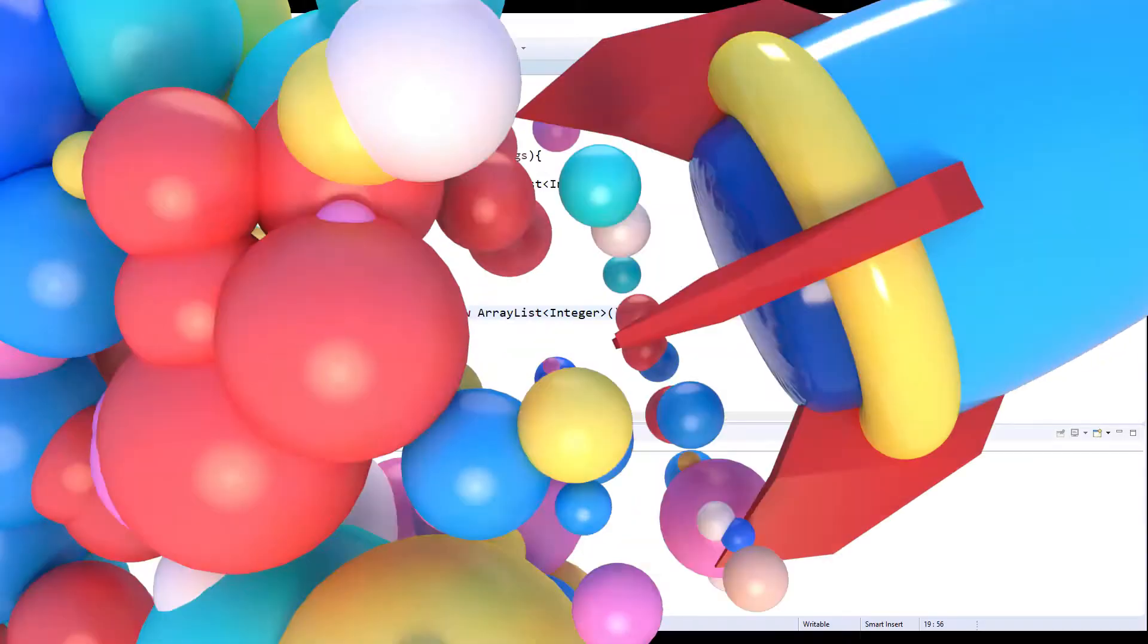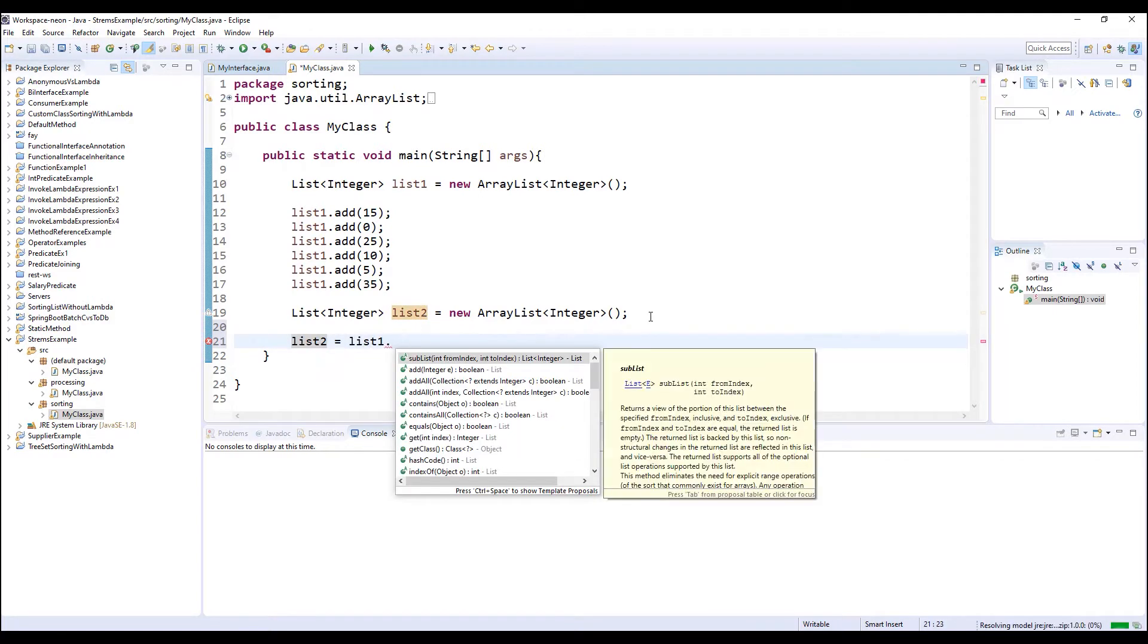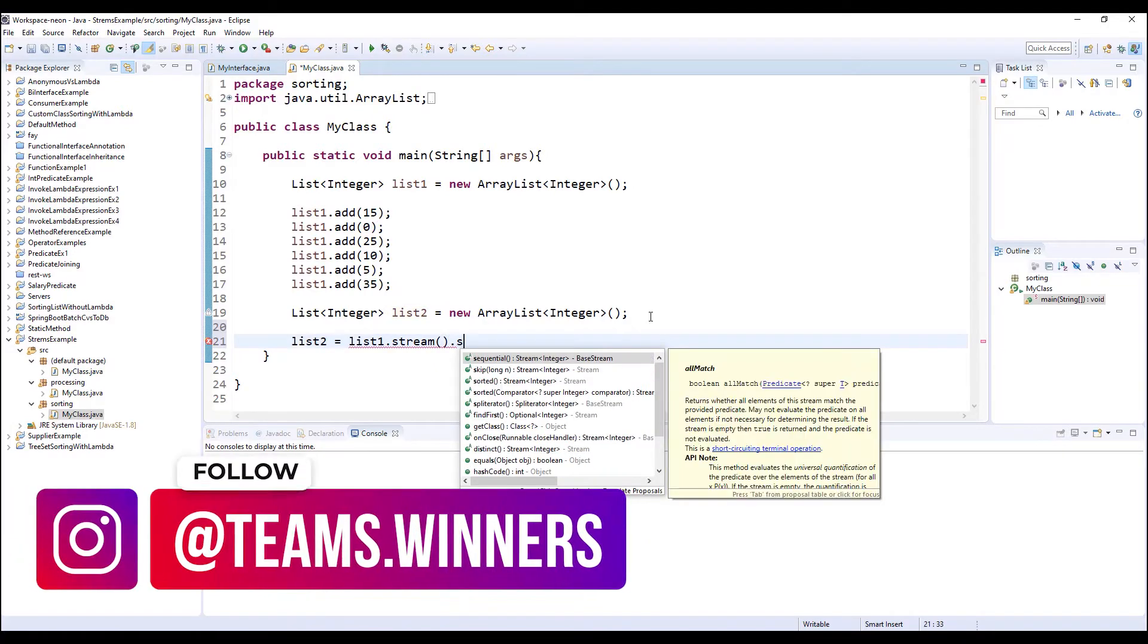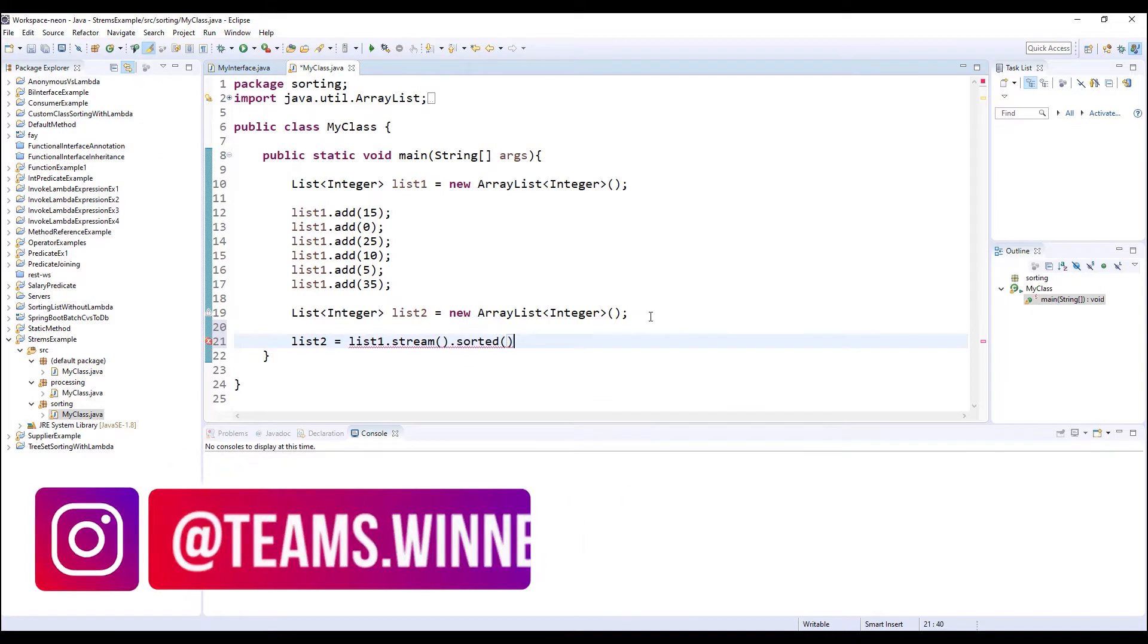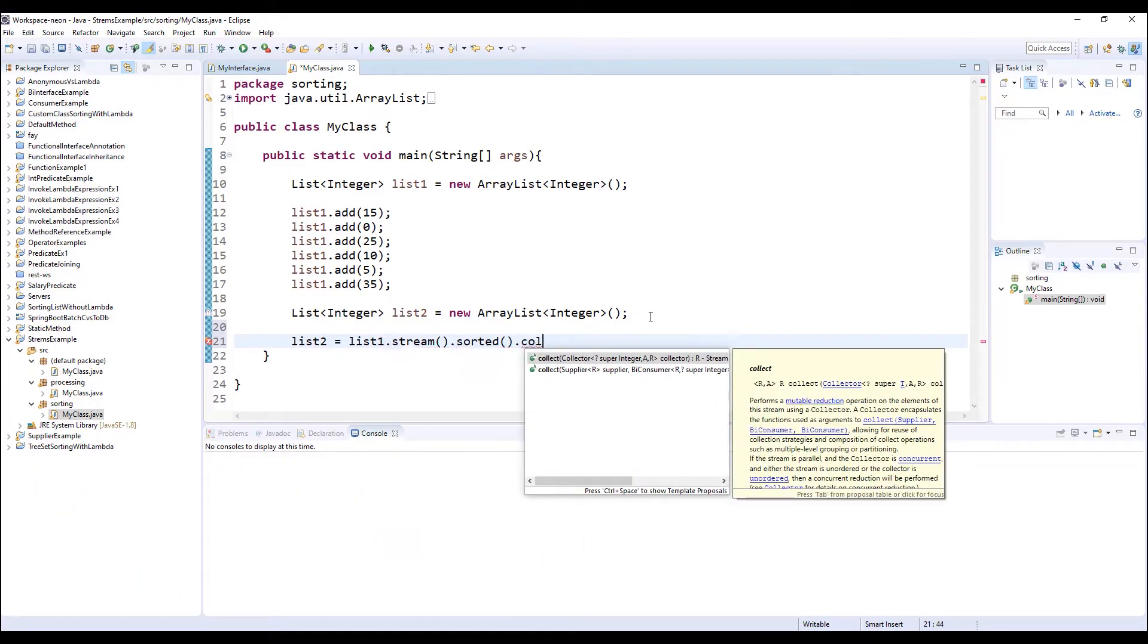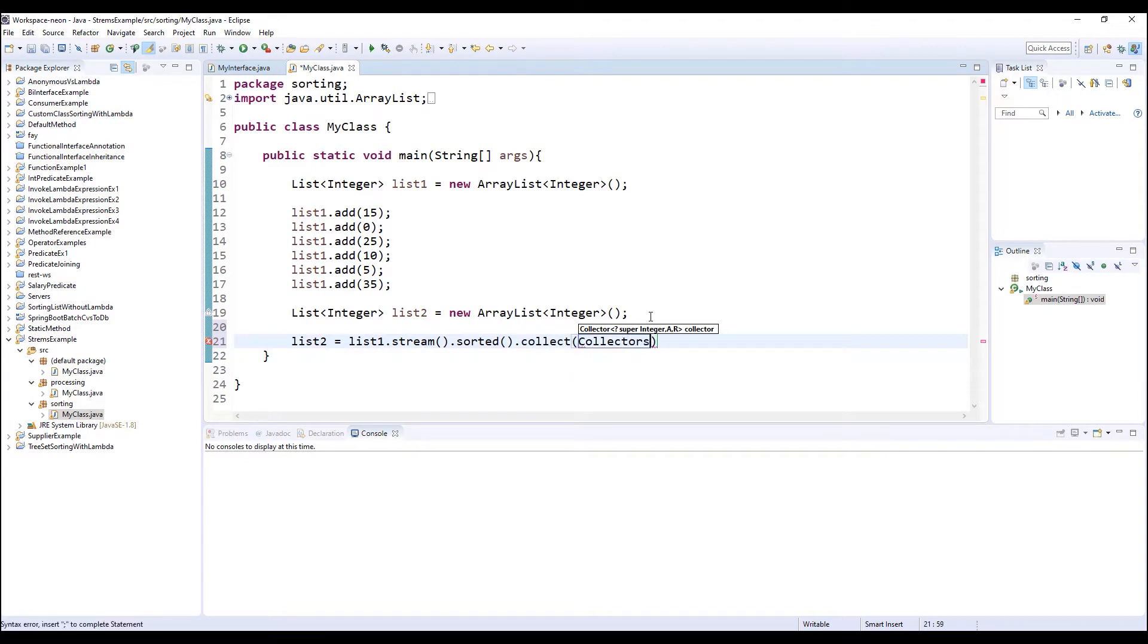Let's execute our default sorting order. List2 equals list1.stream().sorted().collect(Collectors.toList()). I'll print 'Sorting by default order' plus list2.